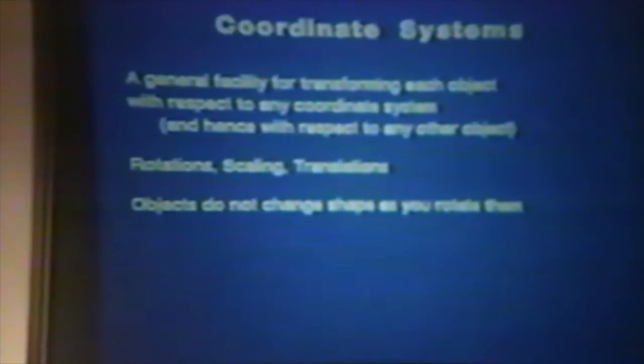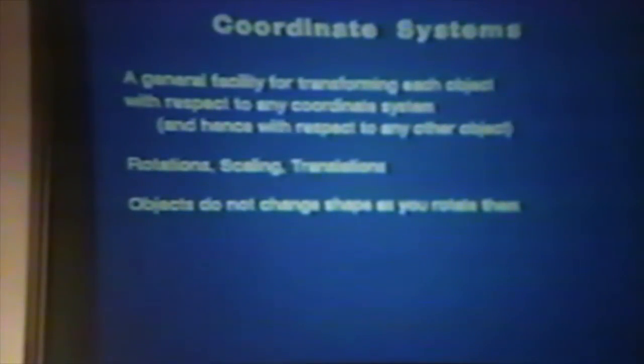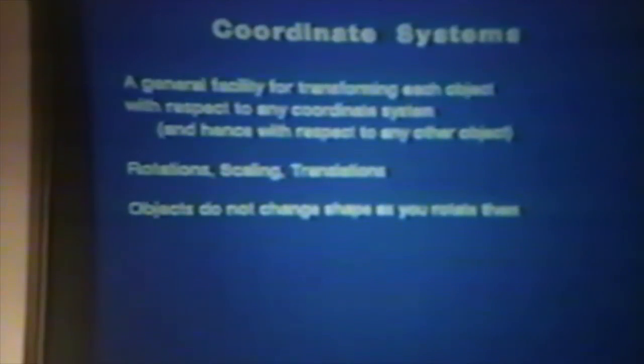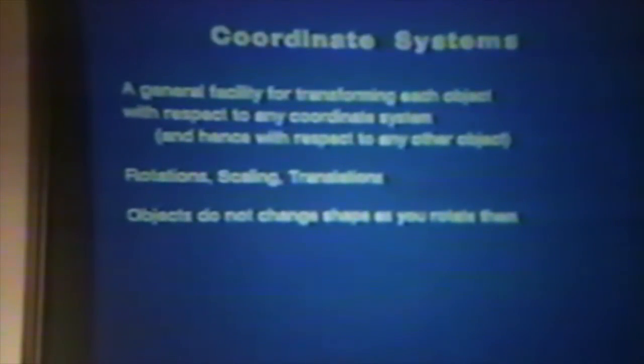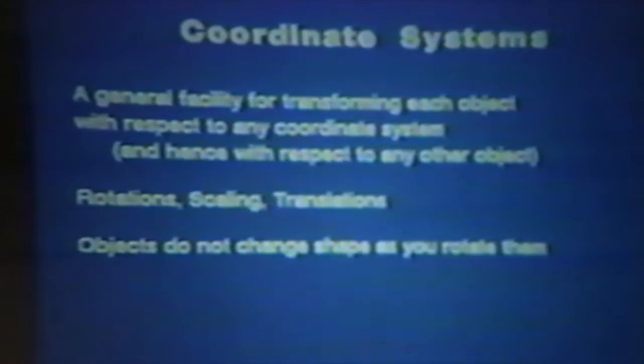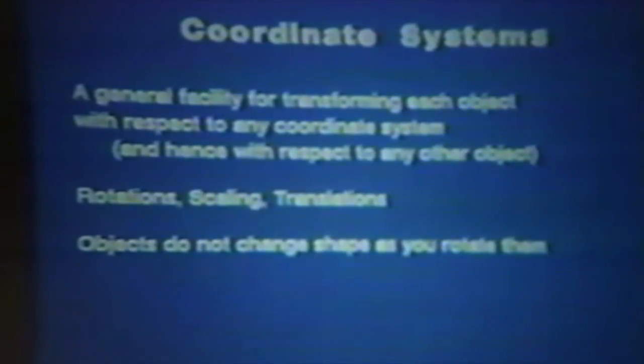I wanted a general facility for transforming each object with respect to any other object in the scene. Transforming means rotation, scalings, and translations. I was interested in making sure that objects do not change shape as you rotate them. The idea is that in order to move an object around, you grab it by its coordinate system and twist it, and then it moves somewhere else all at once.